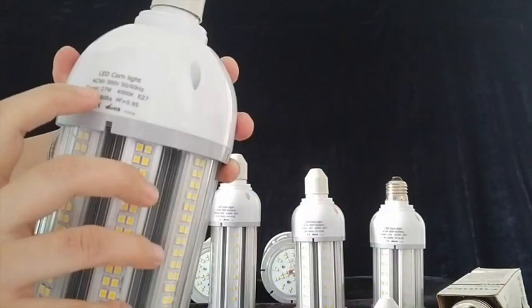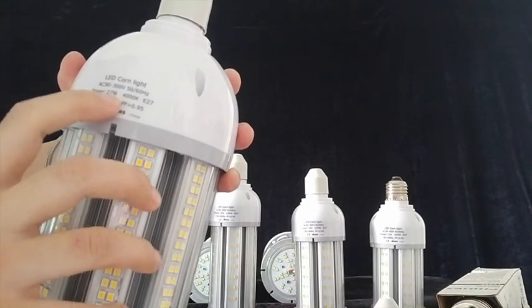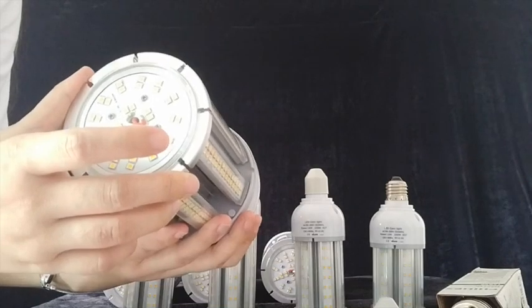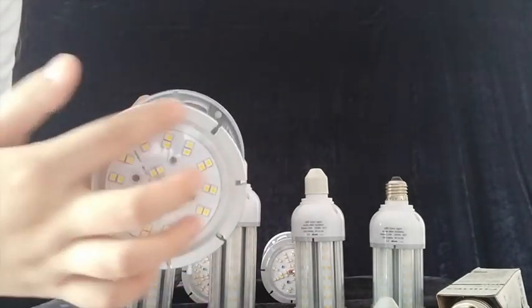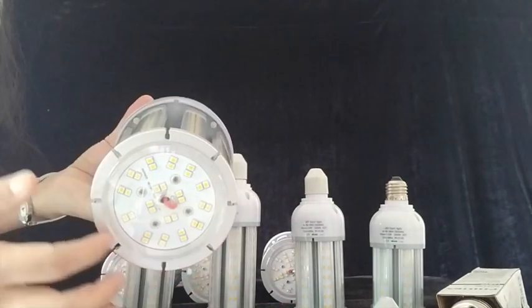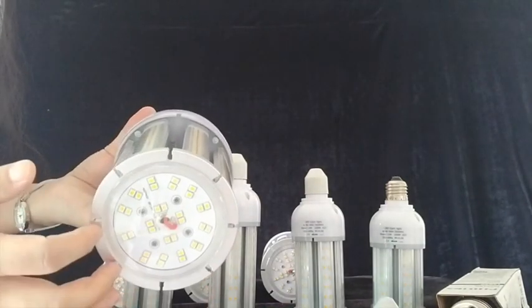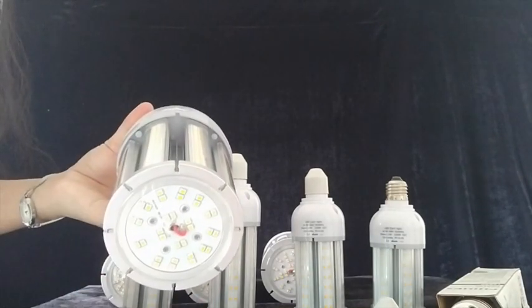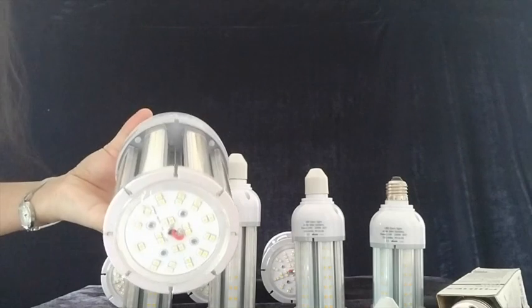And let's see, this is 27 wattage. The diameter is 93 mm. And the chip, also chips on the bottom. Same application used for same fixtures, but to replace different traditional metal halide lamp.